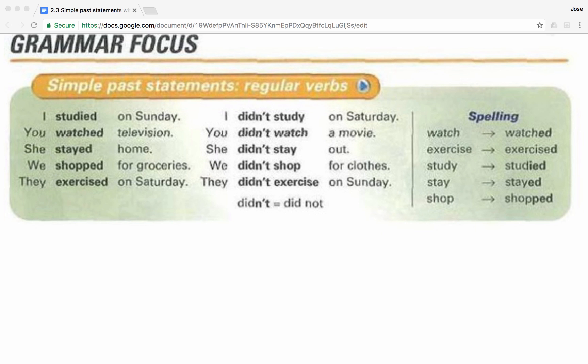Didn't equals did not. Spelling: watch — watched, W-A-T-C-H-E-D. Exercise — exercised, E-X-E-R-C-I-S-E-D. Study — studied, S-T-U-D-I-E-D. Stay — stayed, S-T-A-Y-E-D. Shop — shopped, S-H-O-P-P-E-D.